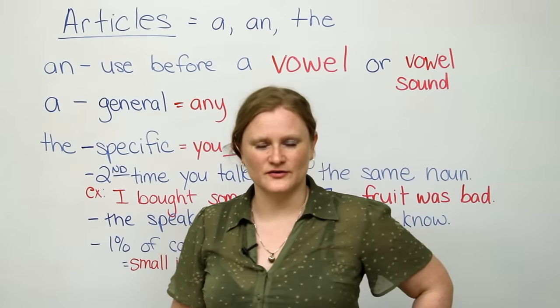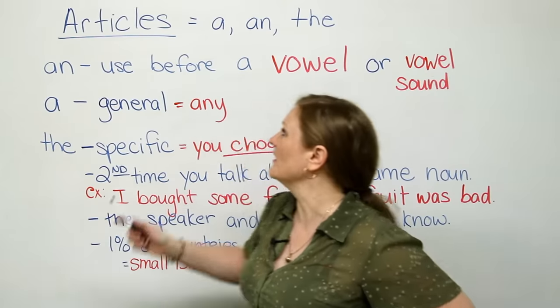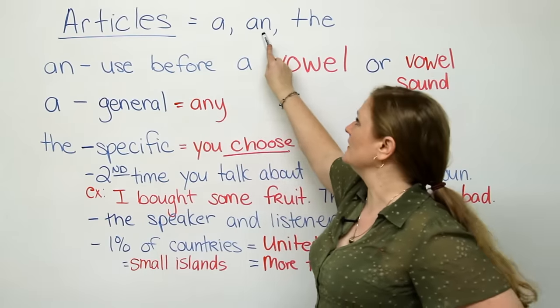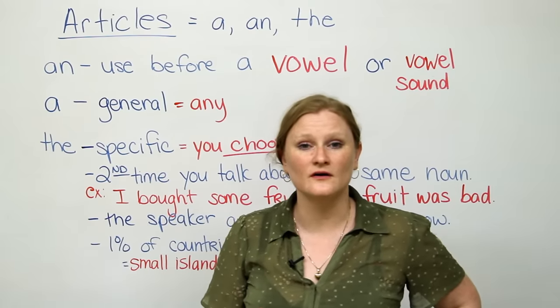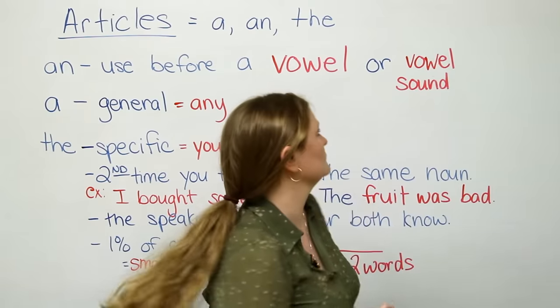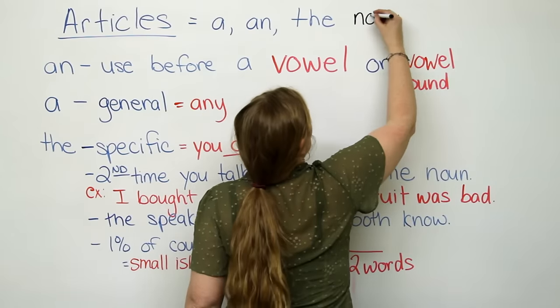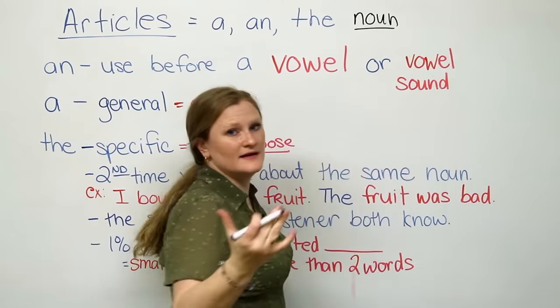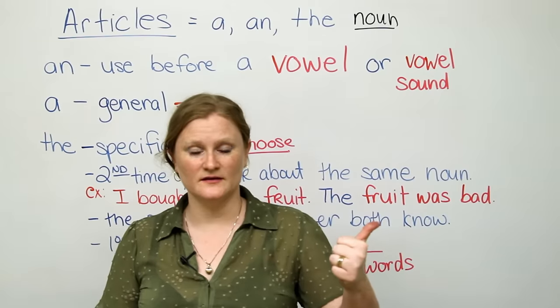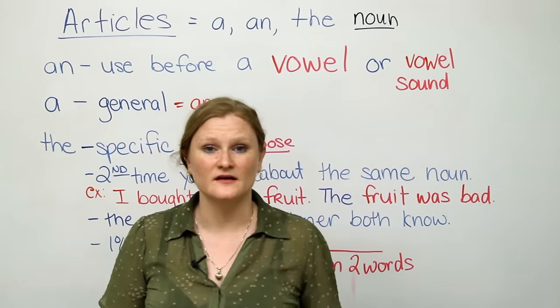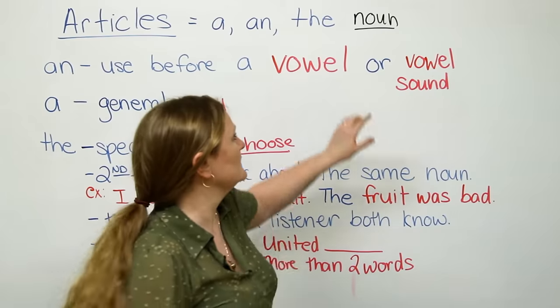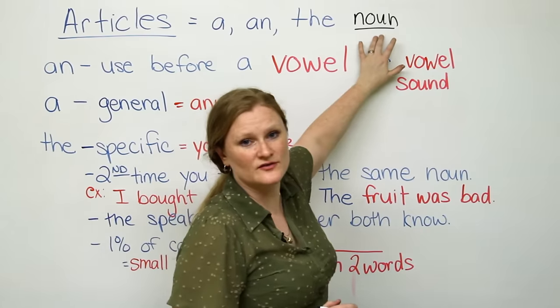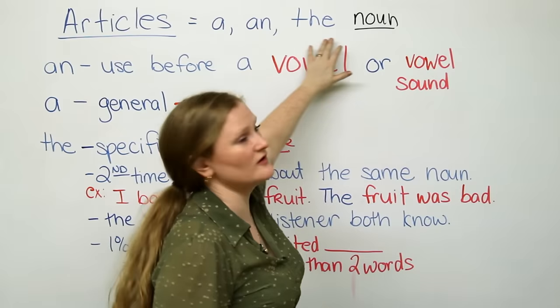What are articles, first of all? Articles are a, an, and the. Articles come before a noun. A noun is a person, a place, or a thing. So, I'm going to generalize here and say that before most nouns in English, you have to use an article.